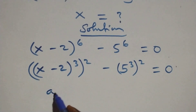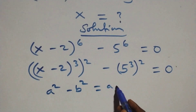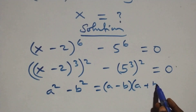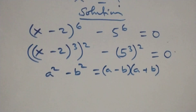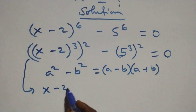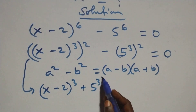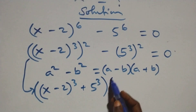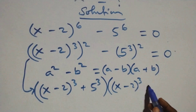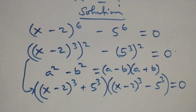This follows the identity a squared minus b squared, which is the same as (a minus b) times (a plus b). So this becomes: (x minus 2) raised to power 3 plus 5 raised to power 3, times (x minus 2) raised to power 3 minus 5 raised to power 3, equals 0.